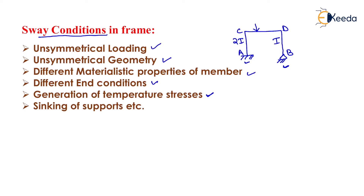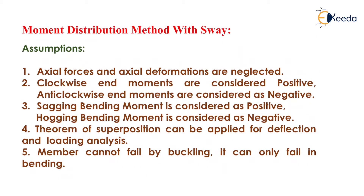The last condition is the sinking of support. If any particular support sinks by an amount delta, the frame will undergo a type of sway, known as sway due to sinking of supports. We can now go over the assumptions used in the moment distribution method with sway, which are the same as those for the moment distribution method without sway studied in previous lectures.